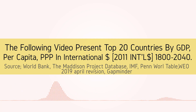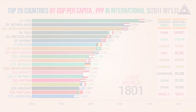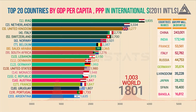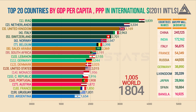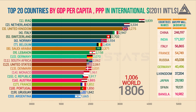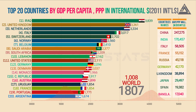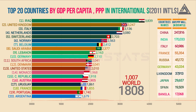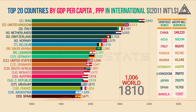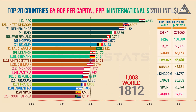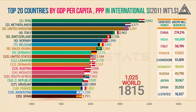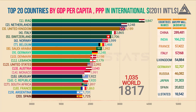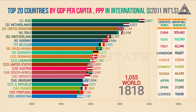GDP per capita is a measure of a country's economic output in a given year, divided by the average or mid-year population for the same year. In this video, GDP per capita is converted to international dollars using purchasing power parity rates. An international dollar has the same purchasing power over GDP as the US dollar has in the United States.